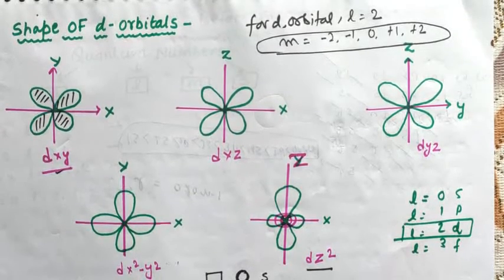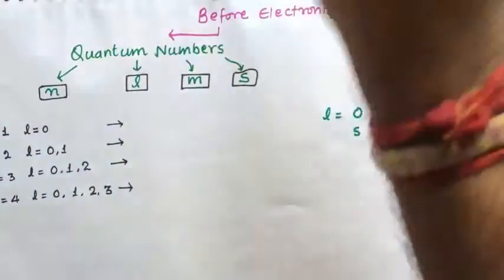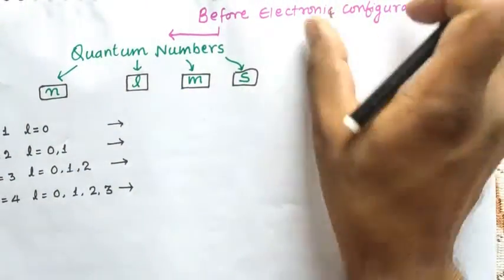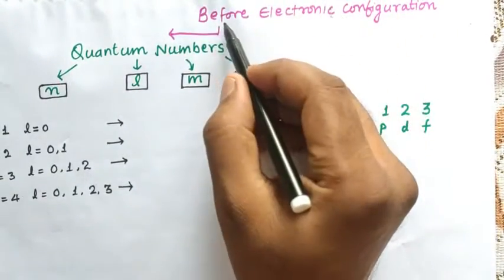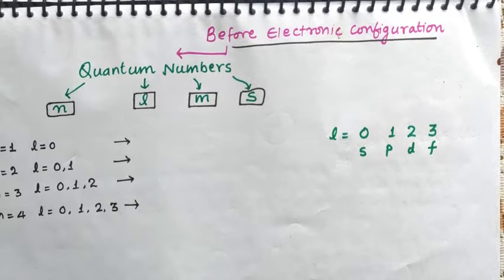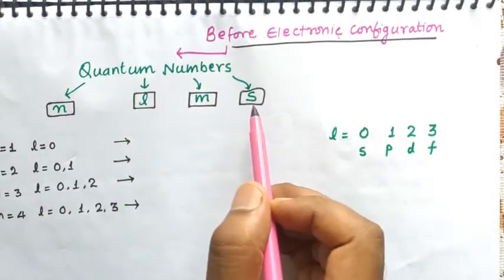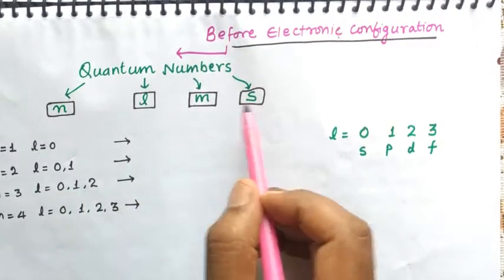The F orbital is very complex in shape, so it is not needed for you - we will only deal with S, P, and D orbitals. Now, before studying electronic configuration, we have to go through quantum numbers so we can understand electronic configuration very easily. Then we will go through Aufbau principle, Pauli's exclusion principle, and Hund's rule. There are four quantum numbers: N (principal), L (azimuthal), M (magnetic), and S (spin quantum number).